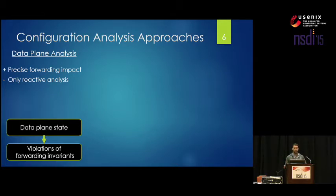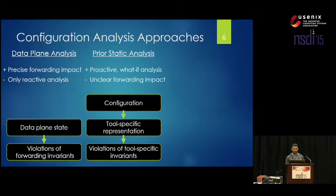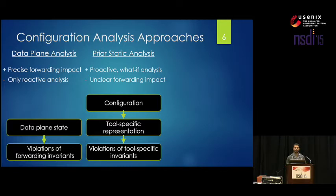To address that, static analysis tools such as RCC and IP Assure start from the configuration files themselves, which allows for proactive analysis. But the issue with these tools is that while they can find a lot of different bugs related to many different properties, they use models customized to find those bugs in specific aspects of the configuration. They don't actually produce the data plane, so they cannot directly check forwarding properties or show you the impact on forwarding that any particular bug has.